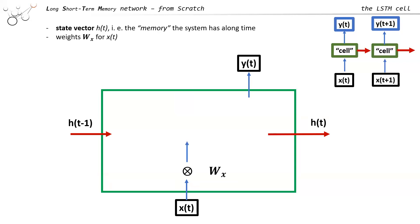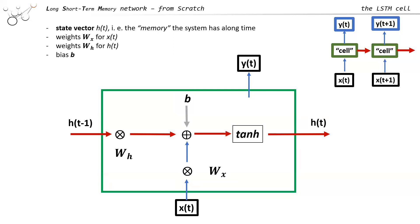In the RNN, we multiply Xt with a learnable Wx, and do the same with the state vector Ht — multiply it with a learnable Wx, add the bias, pass it to a tanh, and create Ht to pass on to the next time step. If we multiply Ht with another learnable Wx, that gives us the output Yt.